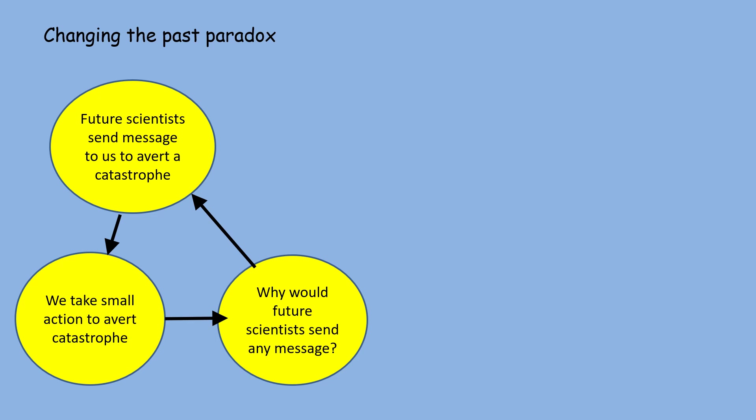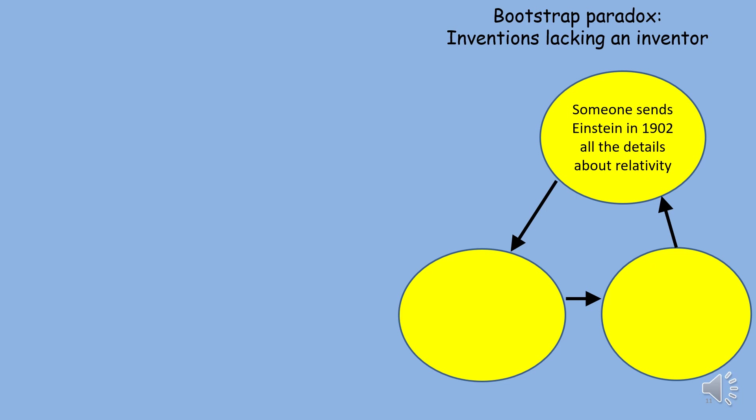Another paradox is known as the bootstrap paradox. It involves inventions or discoveries lacking an inventor. Let's say Einstein was not really the person who discovered relativity. Instead, someone in the future sent him all the details after reading about relativity in modern physics books. Suppose after receiving that information, Einstein, then a failed job seeker, published the great discovery under his own name. In that case, where would the idea of relativity have come from?